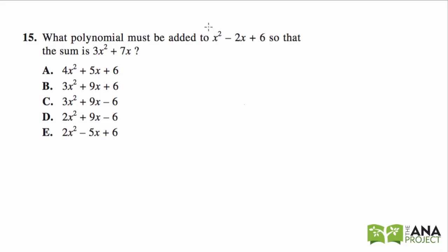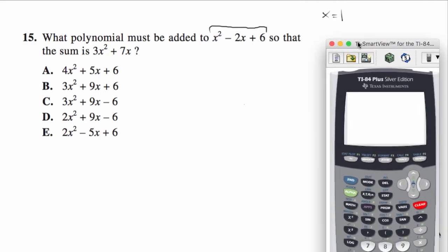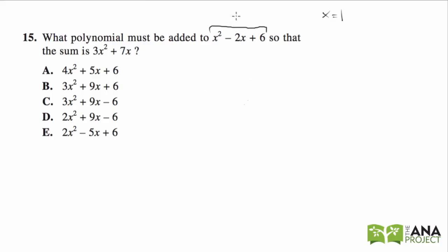Let's just say that x equals 1. So what would this be? What number must be added to 1 squared, which is 1, minus 2 times 1, minus 2, plus 6? So 1 minus 2 is negative 1, plus 6 is 5.